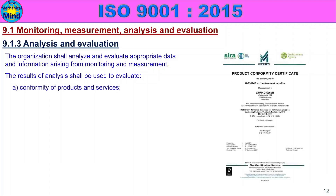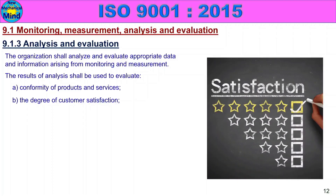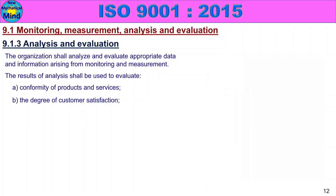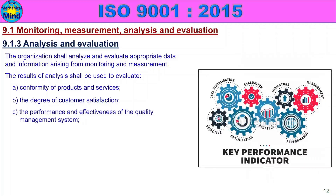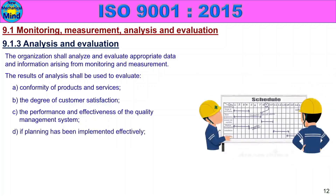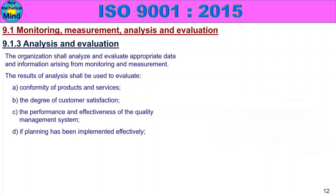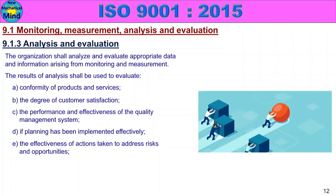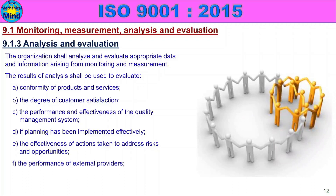The results shall be used to evaluate: conformity of products and services — whether product and service standard requirements meet conformity; the degree of customer satisfaction; the performance and effectiveness of the quality management system; if planning has been implemented effectively; and the effectiveness of actions taken to address risks and opportunities — identifying risk, opportunity, and follow-up actions. Also, the performance of external providers.